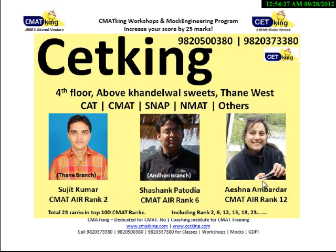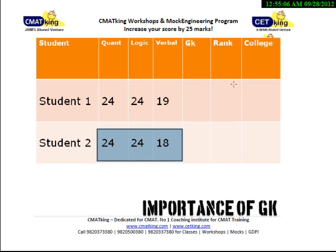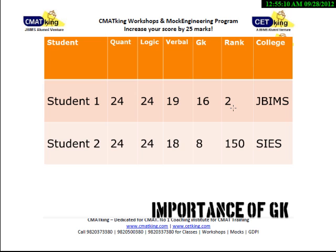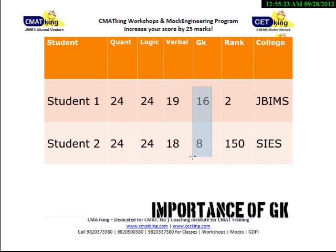I want to motivate you with last year's results. We got 23 ranks in the top 100. CMAT rank 2, rank 6, rank 12 — they are all from CET King. To demonstrate GK importance: two CET King students had exactly the same score in Quant, DI, and Verbal, but their GK scores were 16 versus 8. The student with 16 in GK was CMAT rank 2 and got into JBIMS; the student with 8 in GK was CMAT rank 150 and got into SIS. GK is a make-or-break thing — engineers, non-engineers, everyone falls flat when it comes to GK.